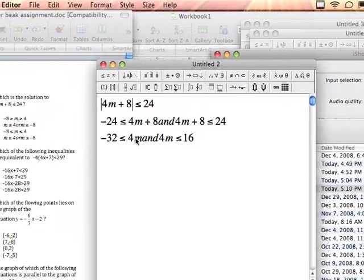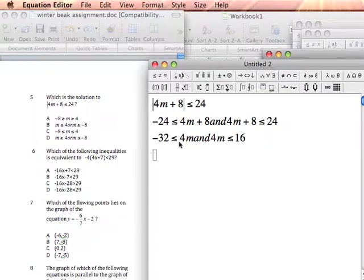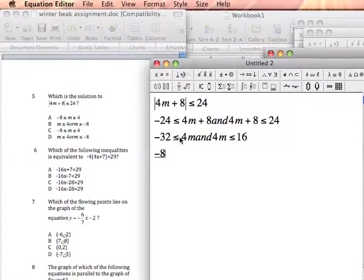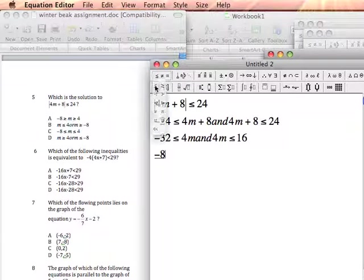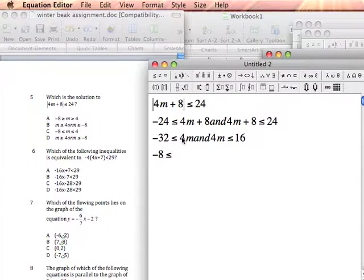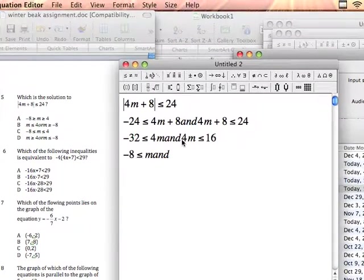Now I'm going to divide 4 into both sides of each inequality. In this case, 4 divided into negative 32 gives me negative 8. I'm going to keep my inequality symbol the same, and 4 divided by 4—the 4s cancel, so I'm left with m. Keep the 'and' there.